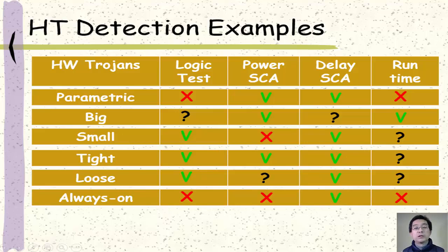The always-on hardware trojan is very hard to detect. Because it is always on, runtime monitoring does not show any difference, and the power trace does not show any difference either. Some always-on hardware trojans do not change the functionality of the system, so logical test may not be able to find them. However, always-on hardware trojans do change the delay of the circuit, so path delay based side channel analysis can capture such hardware trojans.